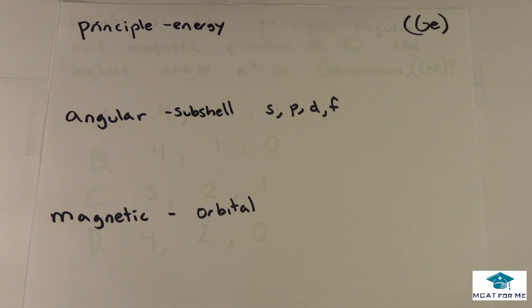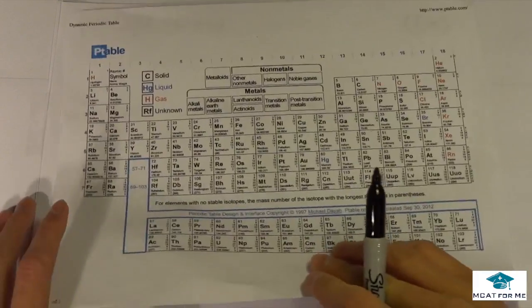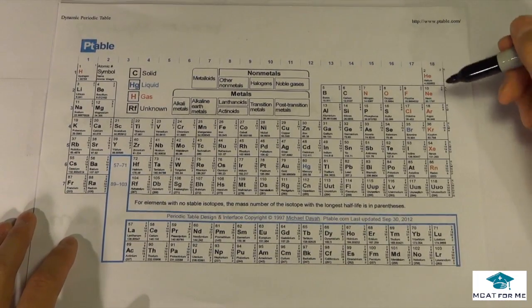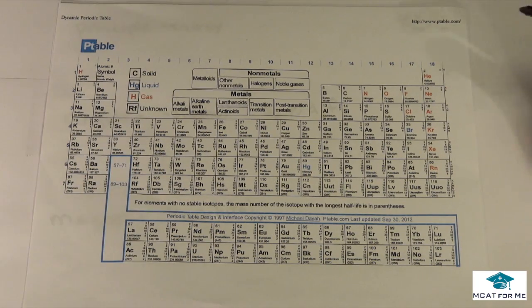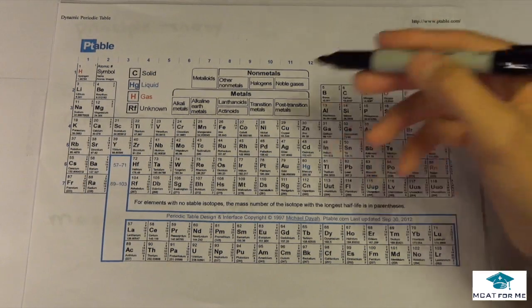So the first thing we want to figure out is what do all these numbers mean? The principal quantum number is the energy level. If we look on a periodic table, the energy level corresponds to these periods: 1, 2, 3, 4. Those are all the principal quantum numbers.